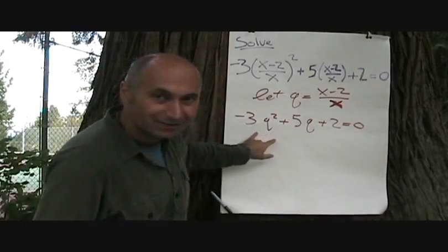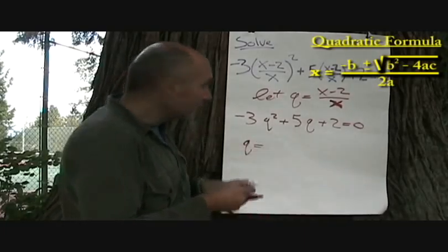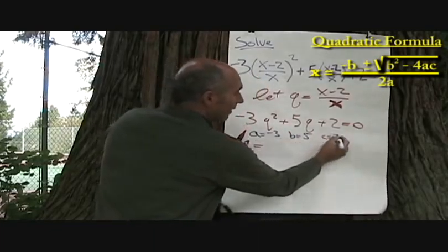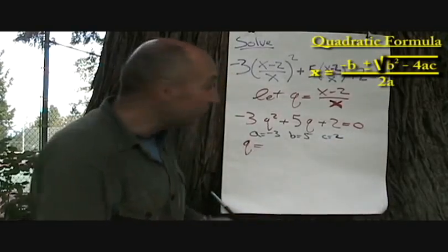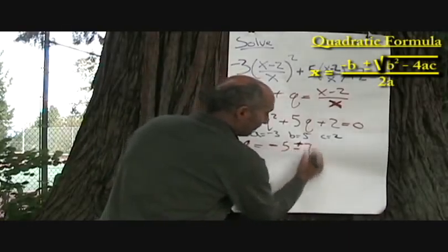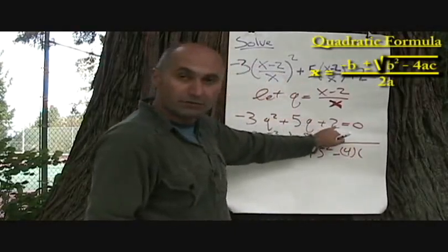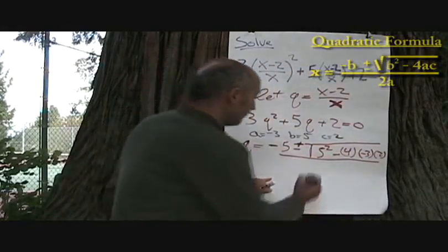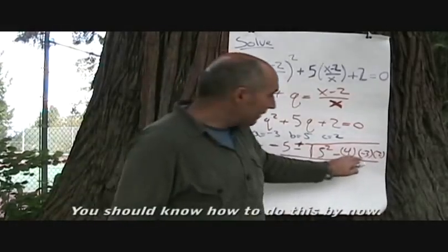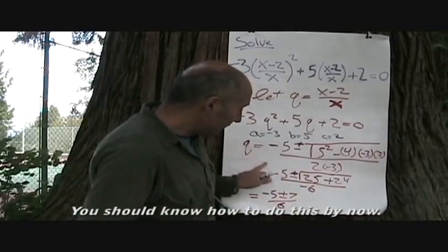Q is equal to our quadratic formula. Negative B - our B is 5. You could write out your A, B, and C: A is negative 3, B is 5, and C is 2. It's a good idea to do this to eliminate human error. So it's going to be negative B, which is negative 5, plus or minus the square root of B squared (5 squared) minus 4 times negative 3 times 2, all divided by 2A which is 2 times negative 3.